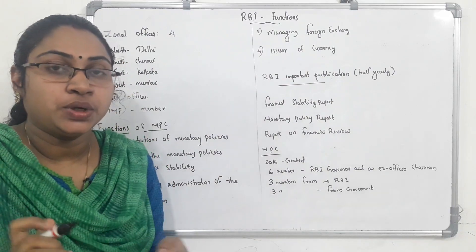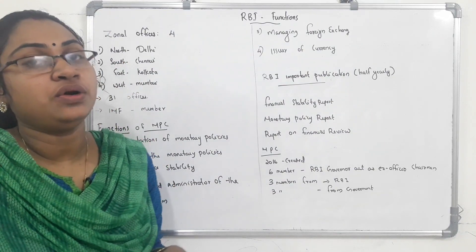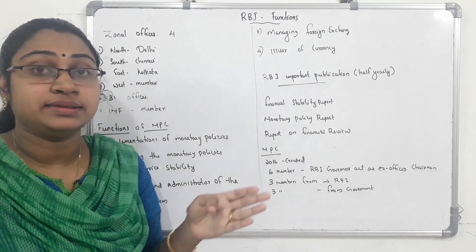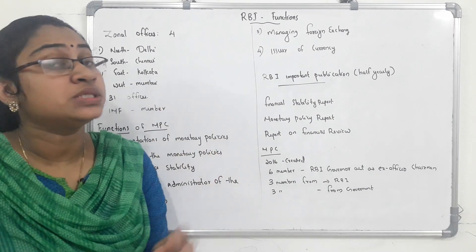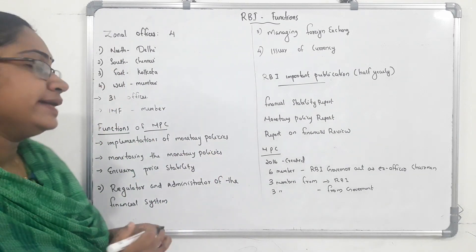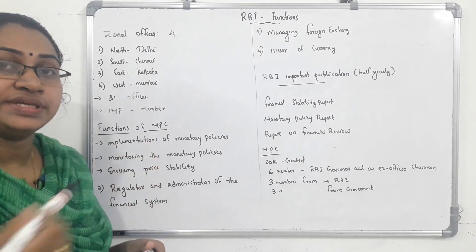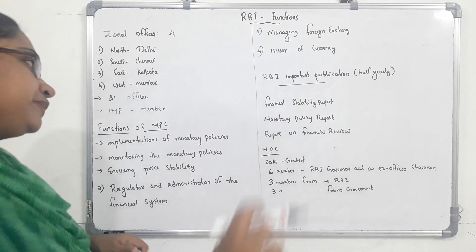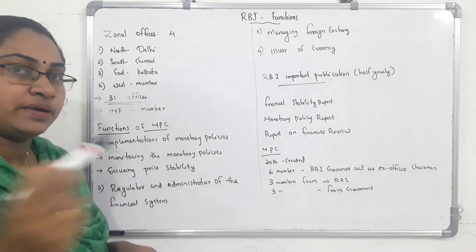RBI has four offices: North in Delhi, South in Chennai, East in Kolkata, and West in Mumbai. In total, there are 30 offices of the RBI across the country.